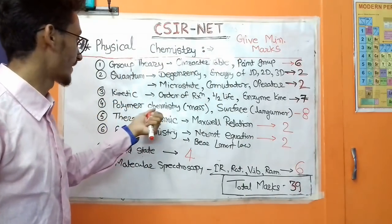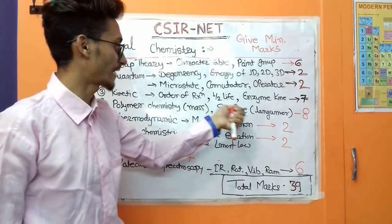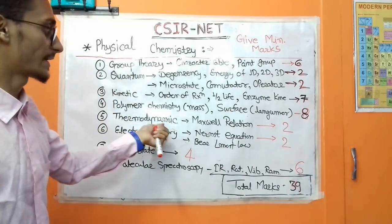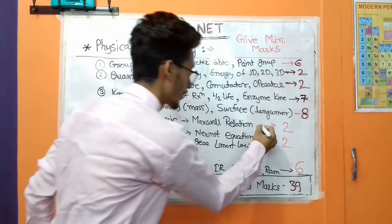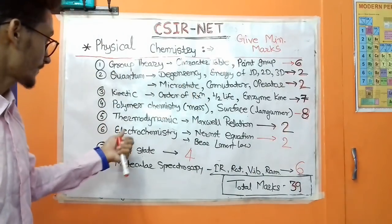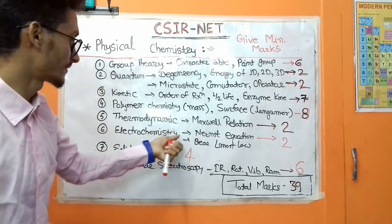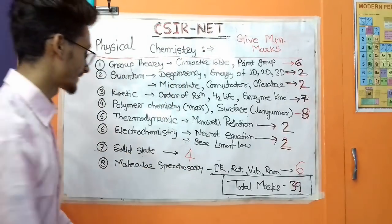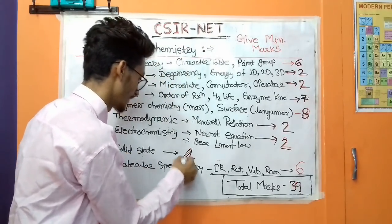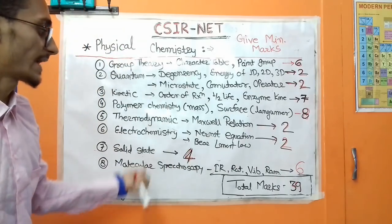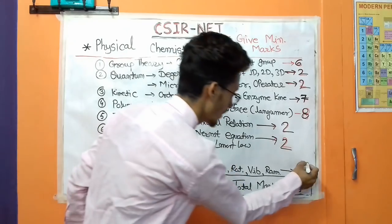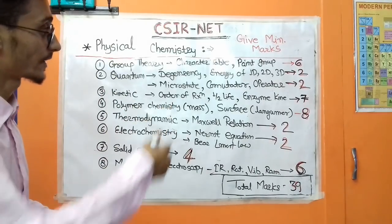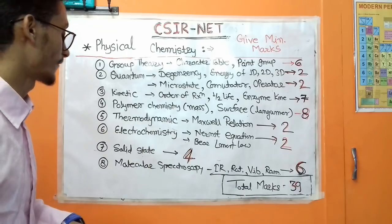Polymer chemistry — including mass of polymers and surface chemistry such as Langmuir adsorption — gives 8 marks. In thermodynamics, the Maxwell relations give 2 marks. Electrochemistry, Beer-Lambert law, and related classifications give 2 marks. Solid state chemistry gives 4 marks. And molecular spectroscopy — IR, rotational, vibrational, and Raman spectroscopy — gives 6 marks. So spectroscopy in physical chemistry also gives maximum marks, along with polymer chemistry.